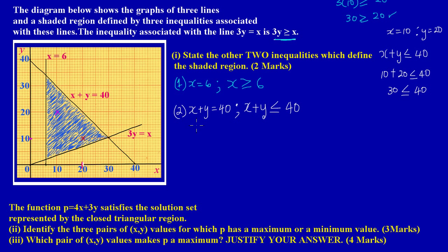Welcome back. Let's look at the solution to question 9b part 2. They have given us a statement: the function p = 4x + 3y satisfies the solution set represented by the closed triangular region. If you notice, we have the shaded region in the shape of a triangle with three corners — three vertices.